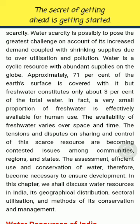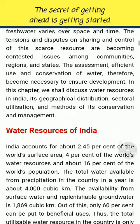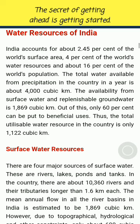In this chapter, we shall discuss water resources in India, its geographical distribution, sectoral utilization, and methods of its conservation and management. India accounts for about 2.45% of the world's surface area, 4% of the world's water resources and about 16% of the world's population. The total water available from precipitation in the country in a year is about 4,000 cubic km. The availability from surface water and replenishable groundwater is 1,869 cubic km. Out of this, only 60% can be put to beneficial uses. Thus, the total utilizable water resource in the country is only 1,122 cubic km.